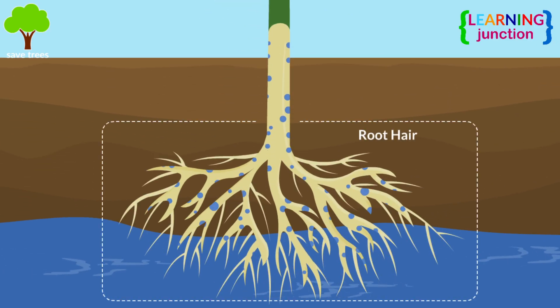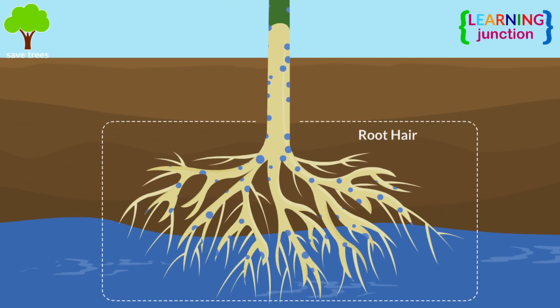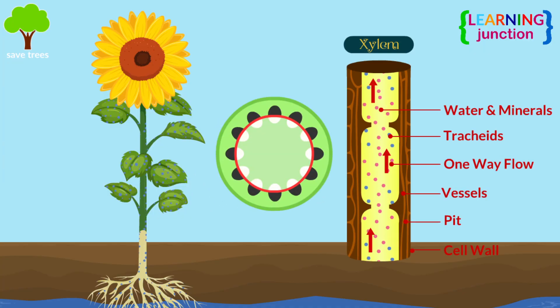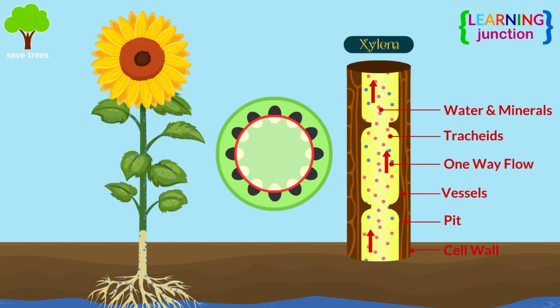Plants absorb water through their roots, precisely using root hairs to increase surface area. This water is transported to the leaf cells through xylem tissues, which is a network of veins.